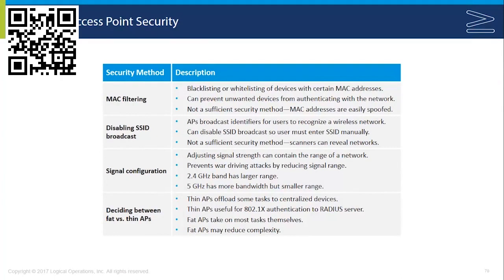Another commonly used method is disabling the broadcast of your SSID — the Service Set Identifier, which is how the access point and wireless network are identified. If you turn off the broadcast, clients will see it as an unnamed or unknown network and must type in the SSID manually. This is one step along the way, but it's not sufficient alone because scanners can reveal those wireless networks that are trying to hide.